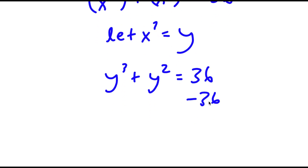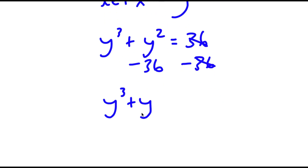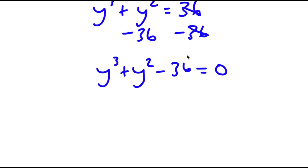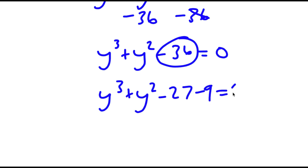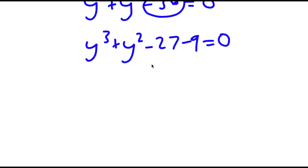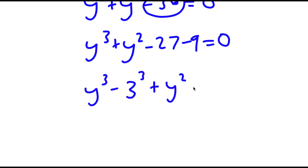Subtracting 36 on both sides gives me y cubed plus y squared minus 36 equals 0. I can rewrite negative 36 as negative 27 minus 9, and then rewrite this as y to the power of 3 minus 3 to the power of 3 plus y squared minus 3 squared equals 0.